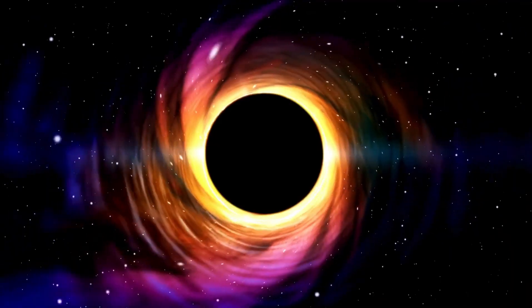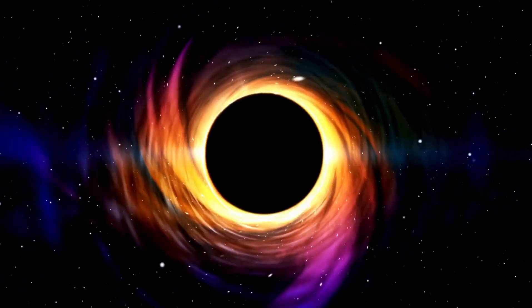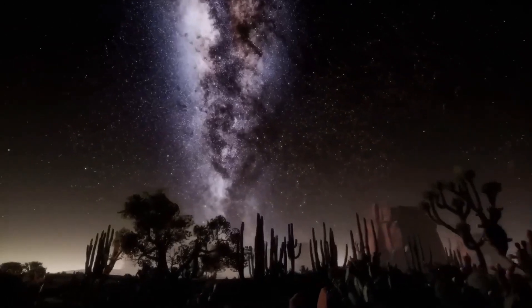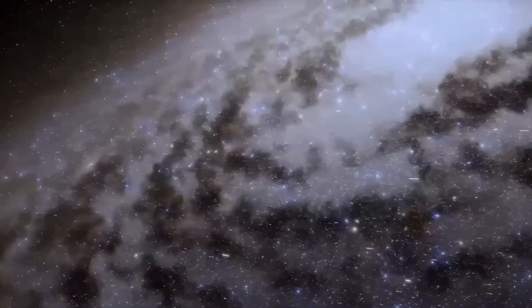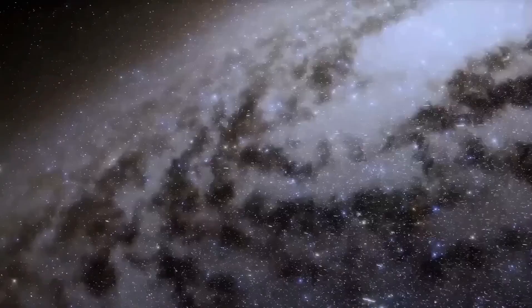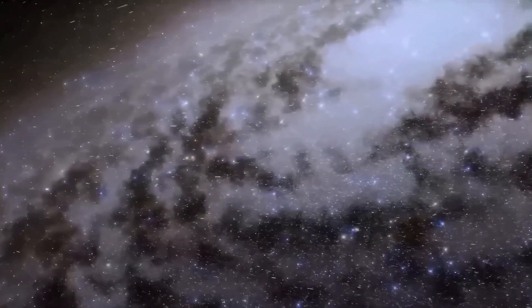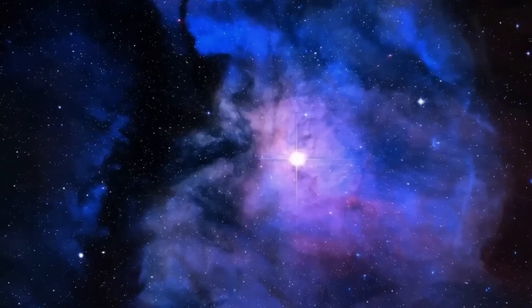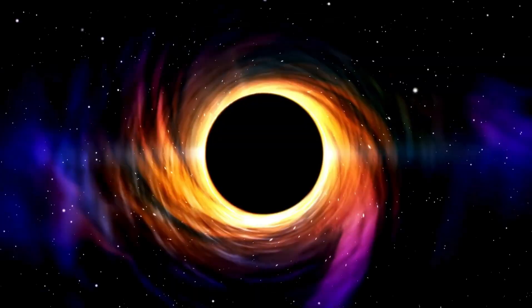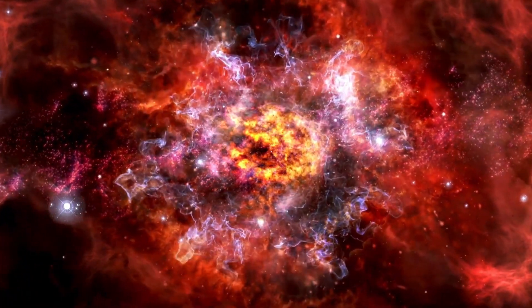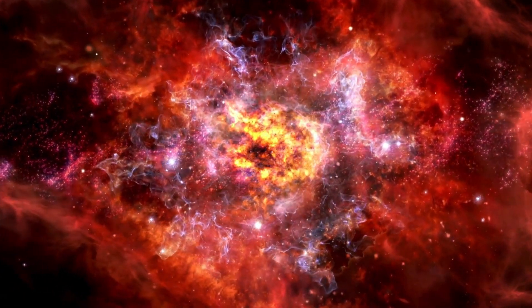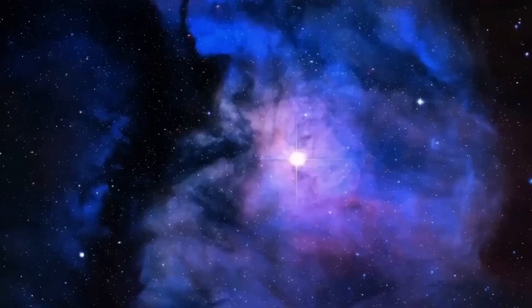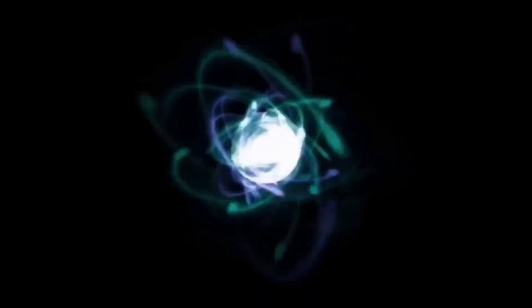Now, the concept of the edge of the universe is a mind-boggling topic that has fascinated scientists, philosophers, and thinkers for ages. We have all sorts of theories about what lies beyond, but the truth remains elusive. However, there are three theories that stand out. The first theory is that the universe goes on forever, with no end in sight. This theory is based on the cosmological principle, which states that the universe is isotropic, meaning that it looks roughly the same in every direction. If this principle holds true, it implies that the universe stretches on endlessly without a boundary.